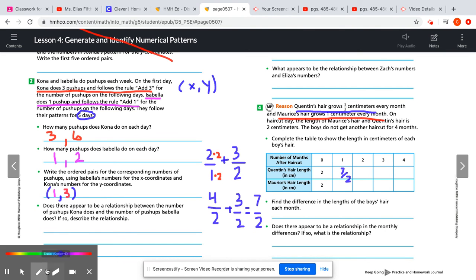And then Maurice's hair is pretty easy. After a whole month, his hair only grows one. So two plus one, he's now at three centimeters.